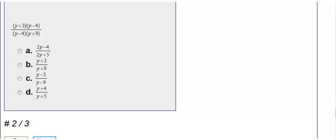Number 2. Here they already factored it for us. So I have y plus 3 times y minus 4 over y minus 4 times y plus 9. All I have to do is cross out what I can, what they both have.